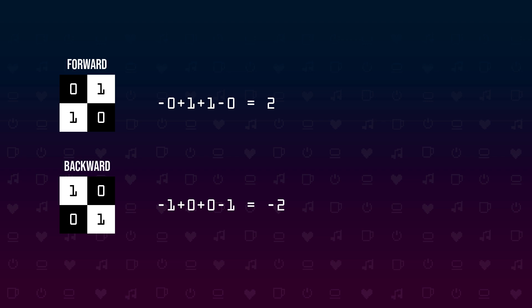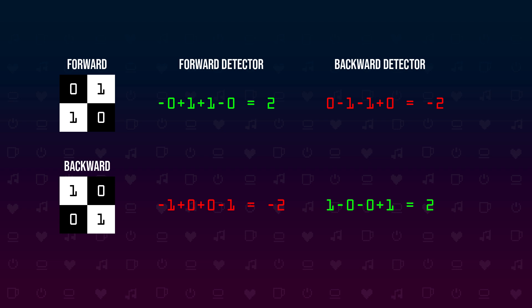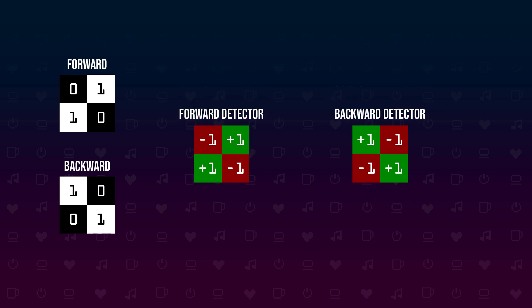So this is detecting a forward slash, and when we negate all the signs we can also detect a backward slash. We now have two feature detectors. What we actually do here is multiply the first and the fourth pixel with negative 1 and the second and the third pixel with 1 for the forward slash detector, and the other way around for the backward slash detector. To illustrate this a little bit better, let's extract these coefficients into matrices of size 2x2.